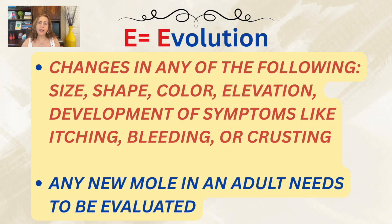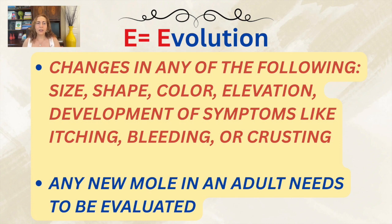Finally, we have E for evolution — meaning any change over time. This includes changes in an existing mole, whether in size, shape, color, elevation, or the development of symptoms like itching, bleeding, or crusting. Even if a mole looks mostly normal, any noticeable change is a warning sign. Evolution also implies the occurrence of a new mole — a new mole in an adult is a red flag, and I'm talking about a mole, not cosmetic brown spots or lesions like skin tags or seborrheic keratosis.